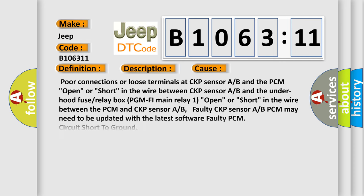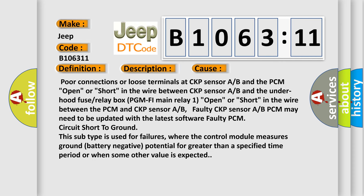This diagnostic error occurs most often in these cases. Poor connections or loose terminals at CKP sensor A or B and the PCM open or short in the wire between CKP sensor A or B and the under hood fuse or relay box. PGM-FI main relay 1 open or short in the wire between the PCM and CKP sensor A or B. Faulty CKP sensor A or B. PCM may need to be updated with the latest software.